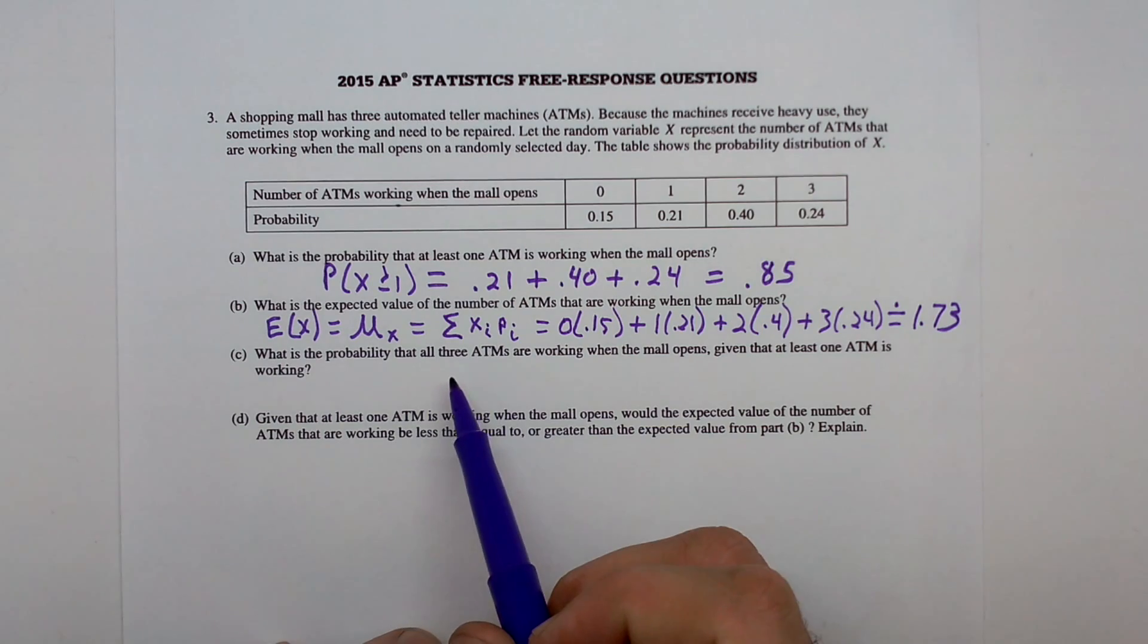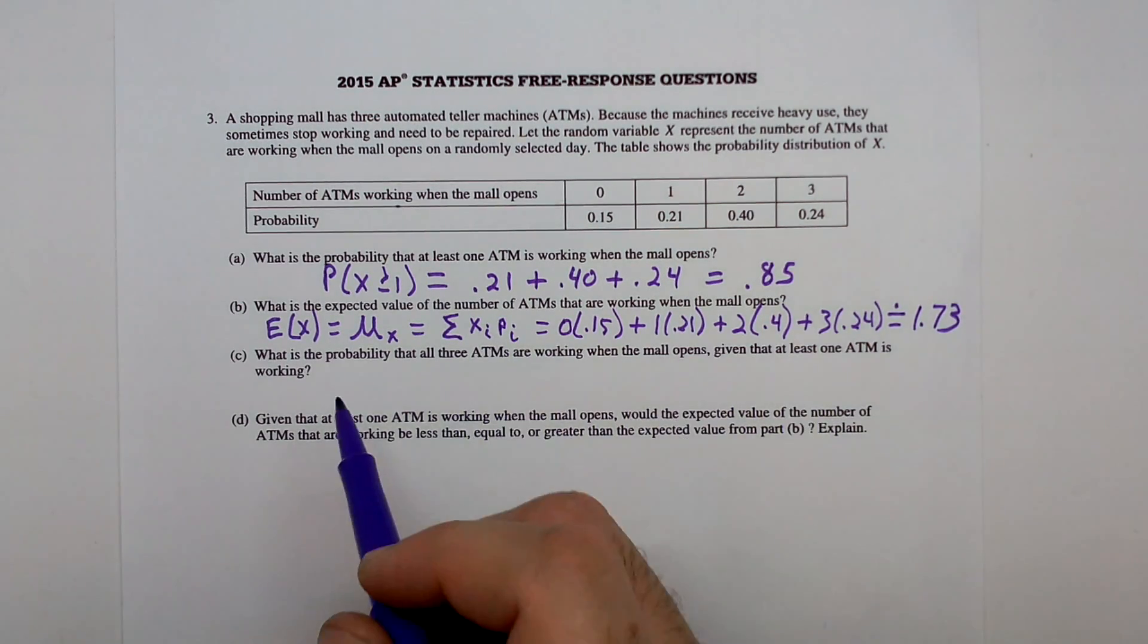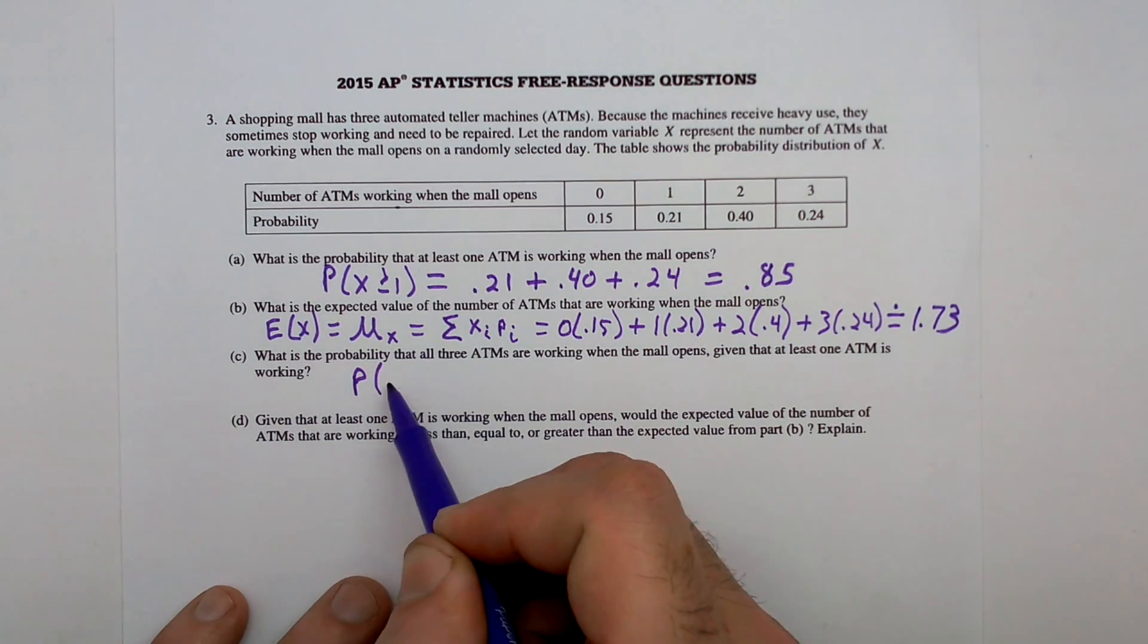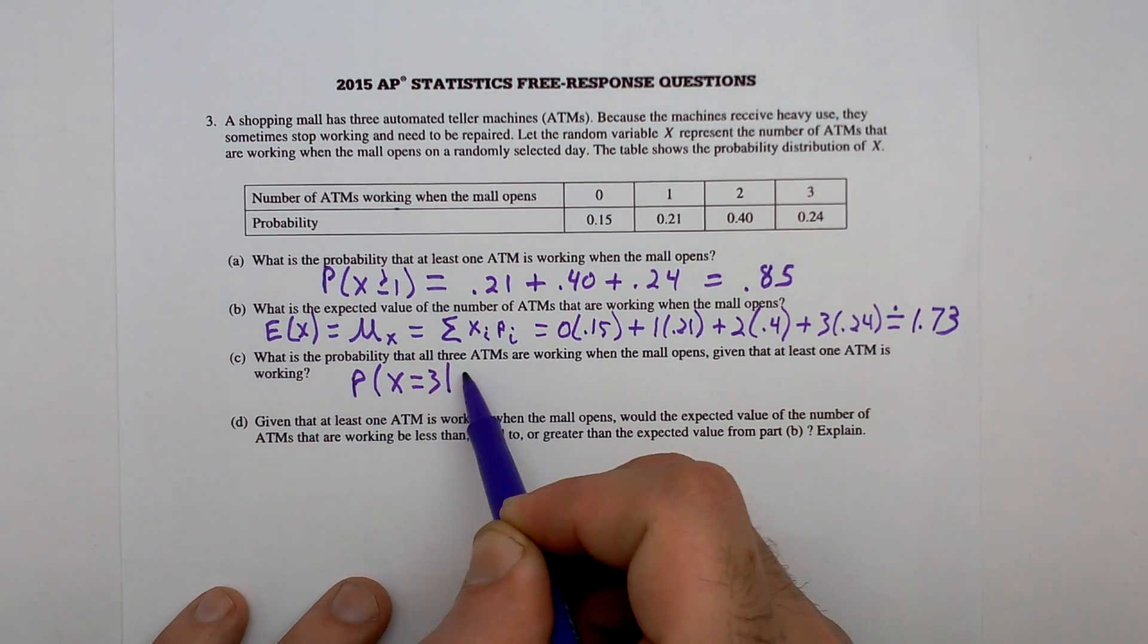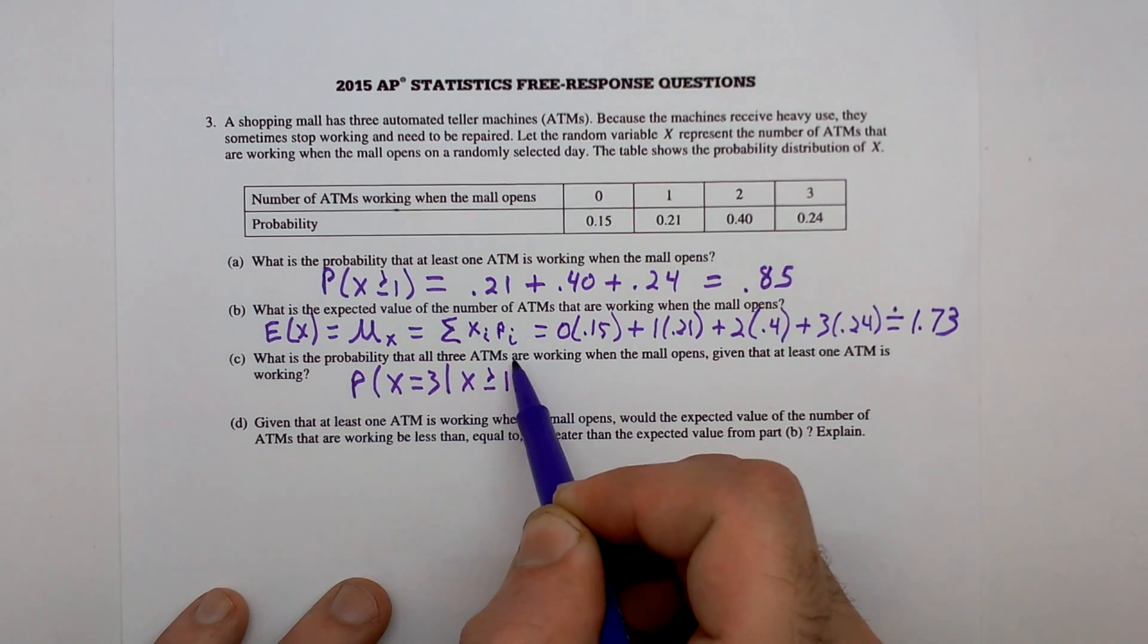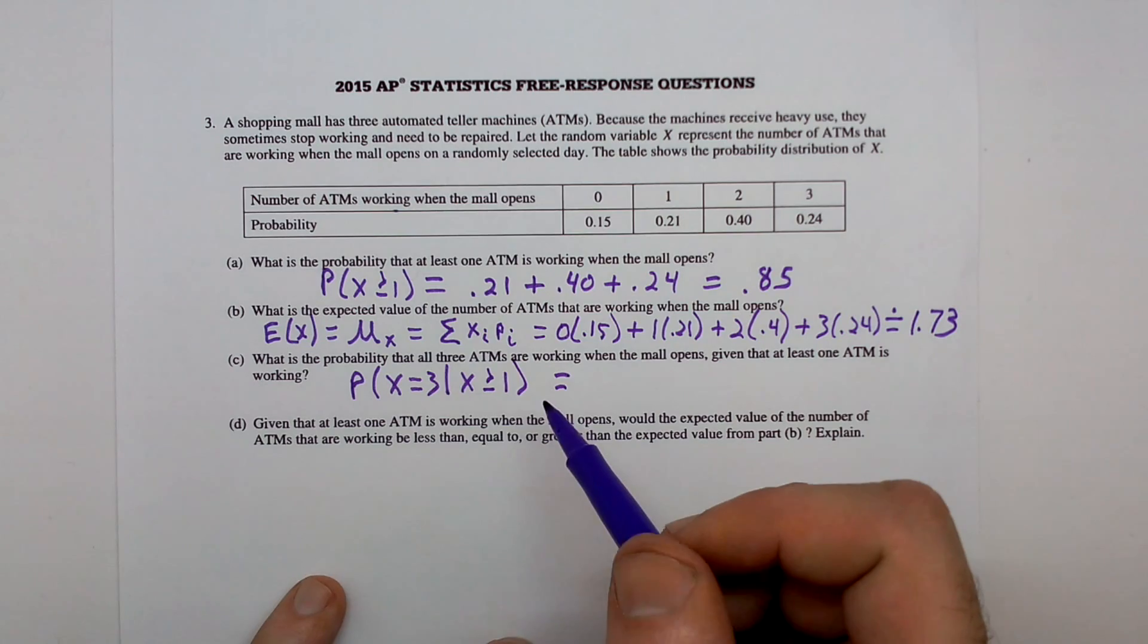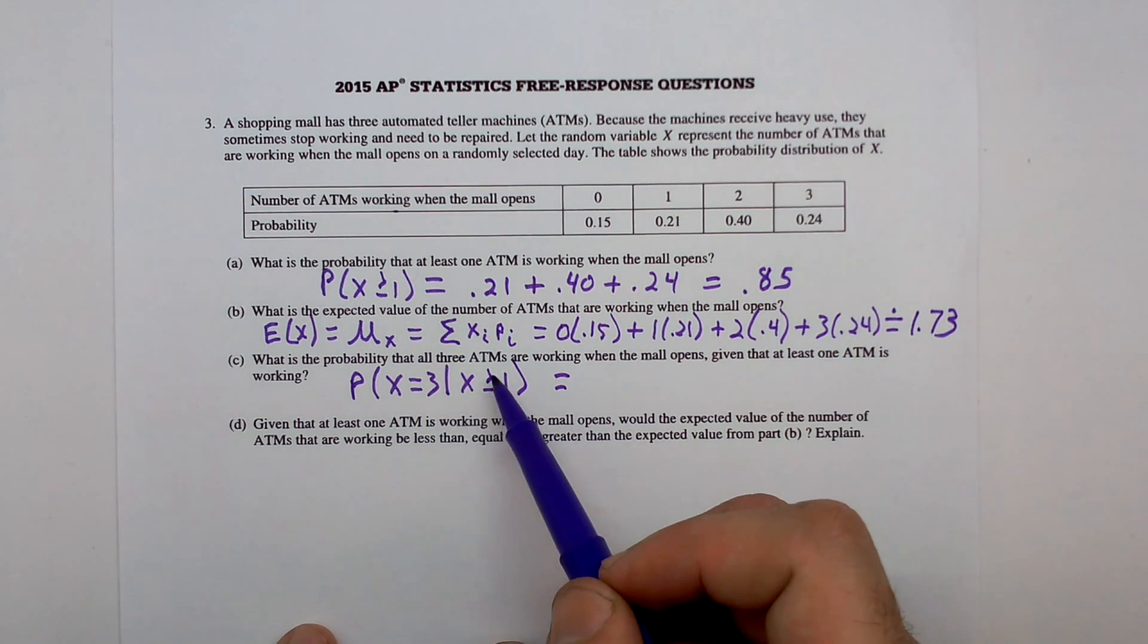Part C, what is the probability that all three ATMs are working, given that at least one is working? So we want the probability that X is going to be precisely 3, given that X is greater than or equal to 1. Well, it is that both of these things happened, assuming that it's the greater than 1.